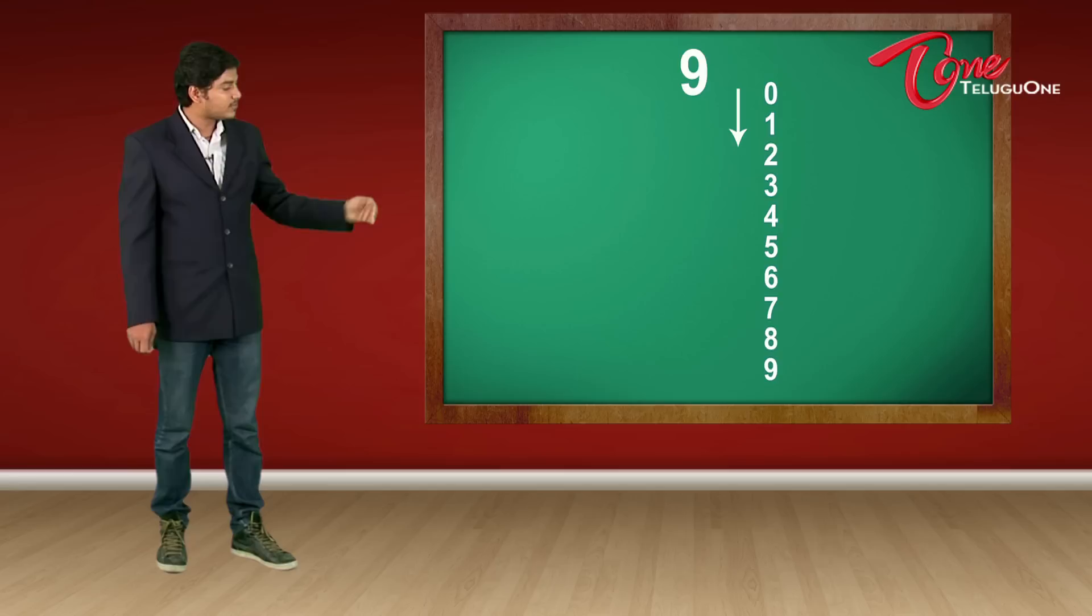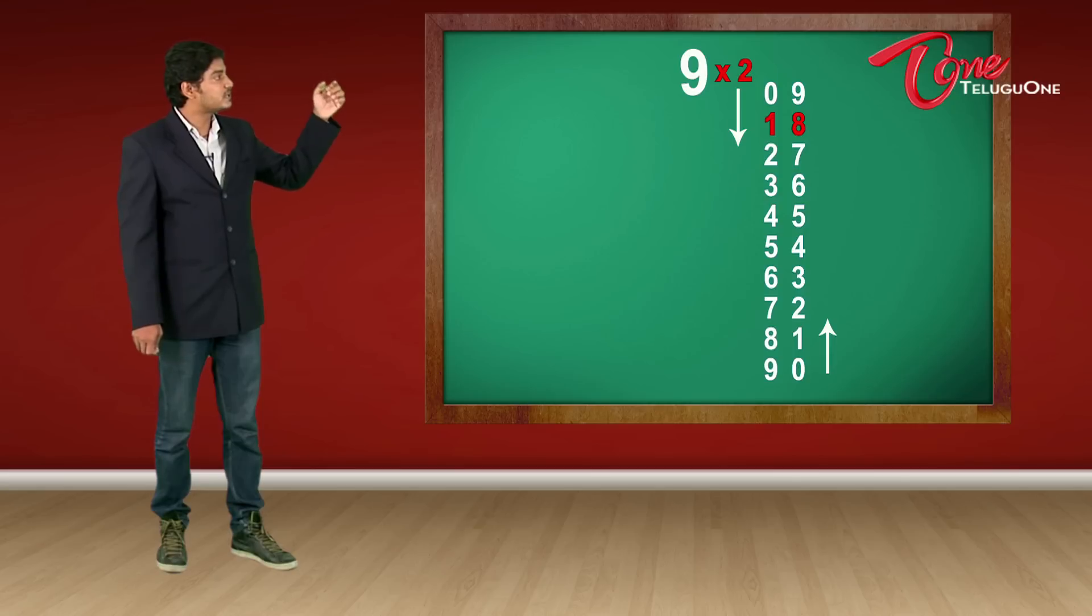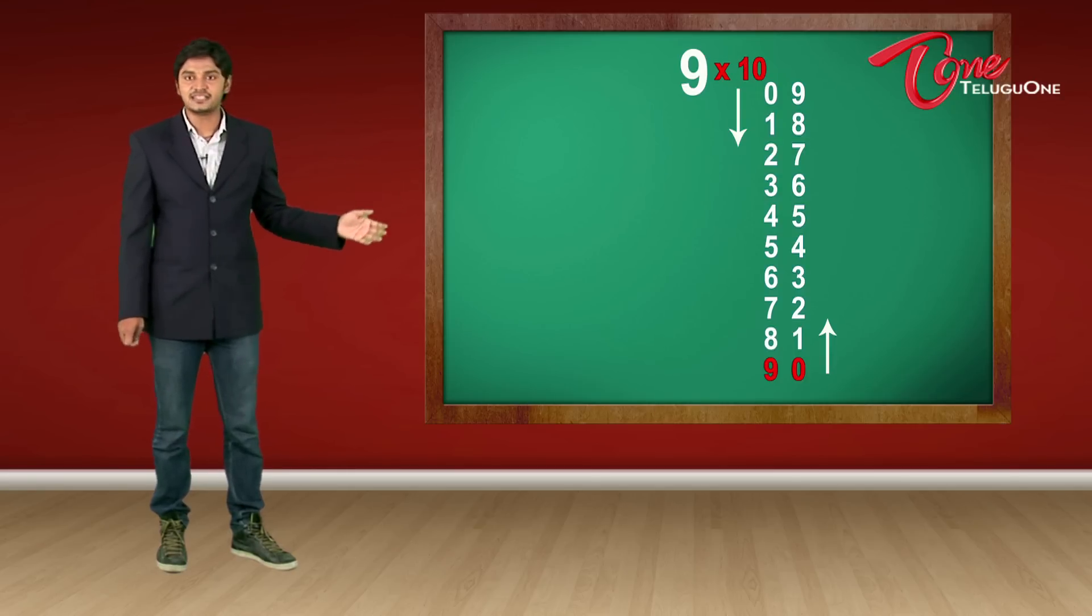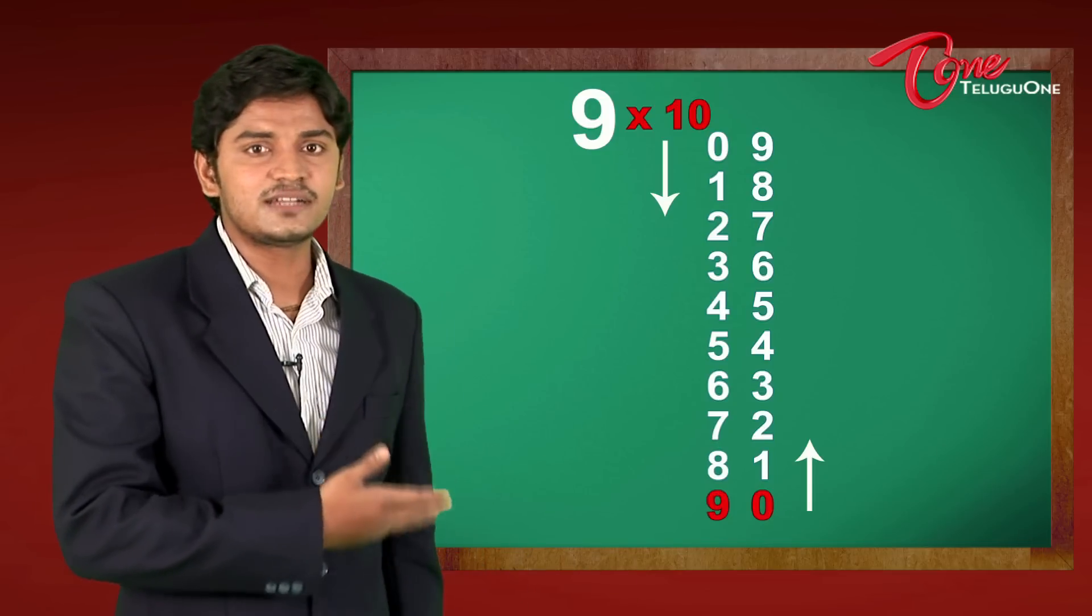So now I'm going to jump onto the other row and start from 0. 0, 1, 2, 3, 4 and so on up to 9. This is my 9 table. 9 times 1 is 09, 9 times 2 is 18, 9 times 3 is 27 and so on up to 9 times 10 as 90. This is a very nice technique and you can all learn it very easily.